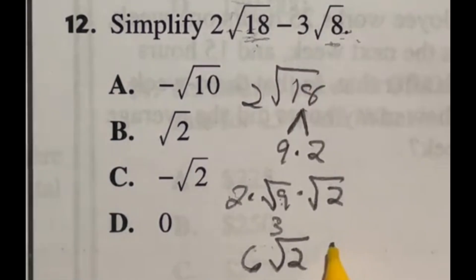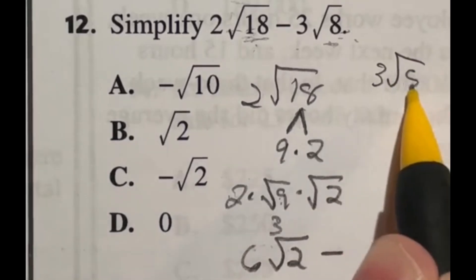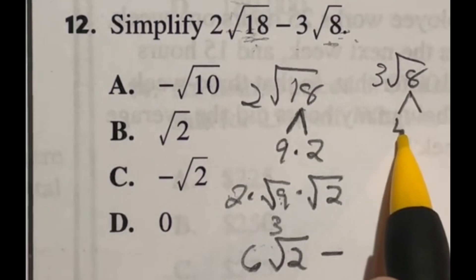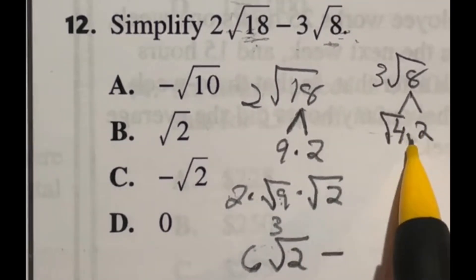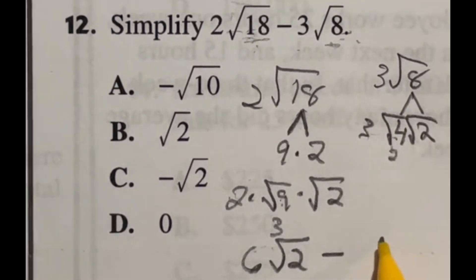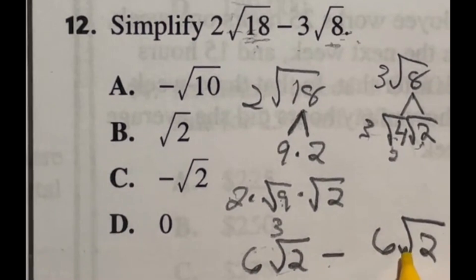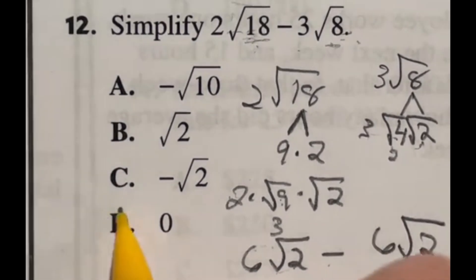Now we have minus and we still have this guy to deal with so 3 square root 8 very similarly we're going to split this into 2 we're going to split it into a 4 and a 2 and in this case we have square root 4 square root 2 and we still have that 3 square root 4 is just 2 and again 3 times 2 is going to give me 6 so we're going to end up with minus 6 square root we still have that 2 so we have 6 square root 2 minus 6 square root 2 which is obviously just 0 answer D.